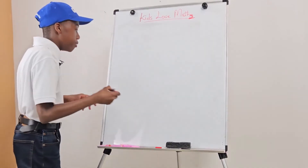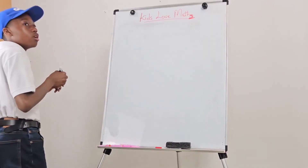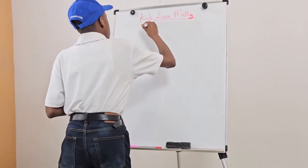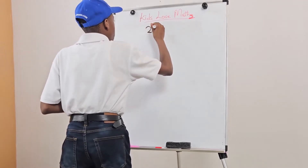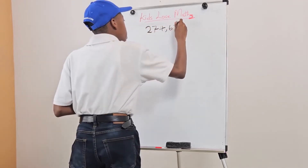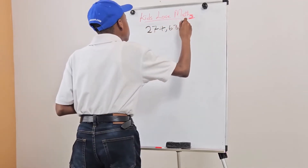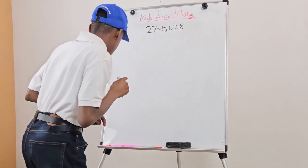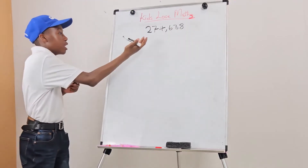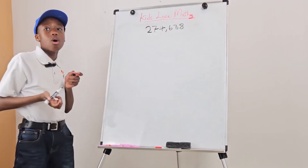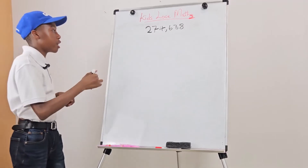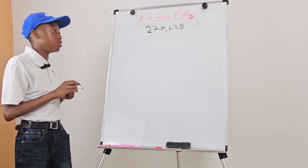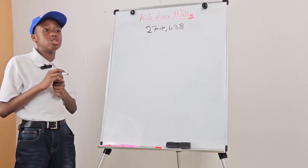Let me write them down. Our example is 274,638. First, do you know how to say this? How you say it is two hundred seventy-four thousand, six hundred thirty-eight.